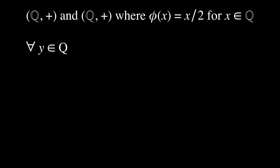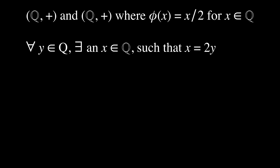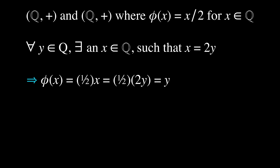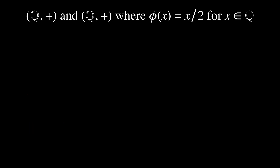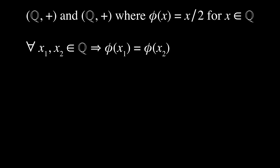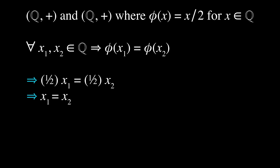Let's consider the following example. Say we have the binary structures (ℚ, +) and (ℚ, +), where φ(x) = x/2 for x in ℚ. Are they isomorphic? Let's first prove it is surjective, that is, onto ℚ. Suppose for all y in ℚ, there exists an x in ℚ such that x = 2y. Then φ(x) = (1/2)x = (1/2)(2y) = y. Since φ(x) = y, we have shown it is surjective. Next, we show it is injective. Suppose for all x₁, x₂ in ℚ, we have φ(x₁) = φ(x₂). Then (1/2)x₁ = (1/2)x₂, which implies x₁ = x₂, thus showing it is injective.